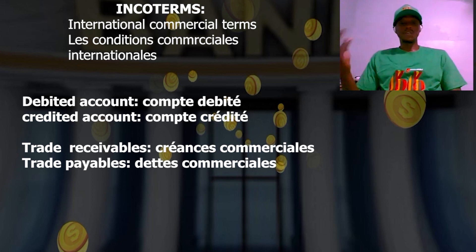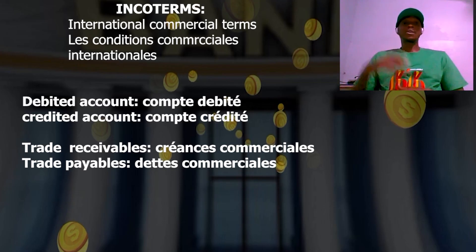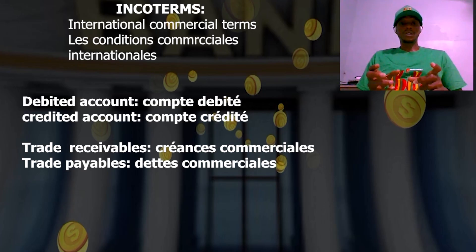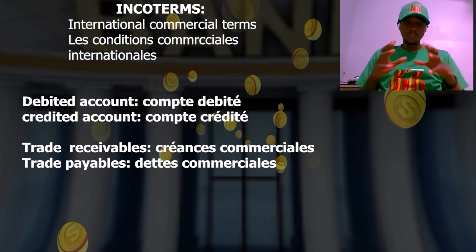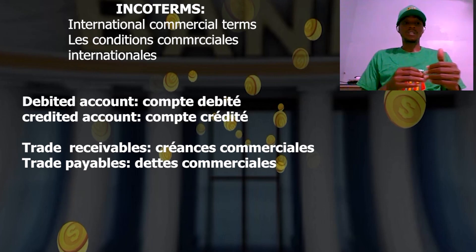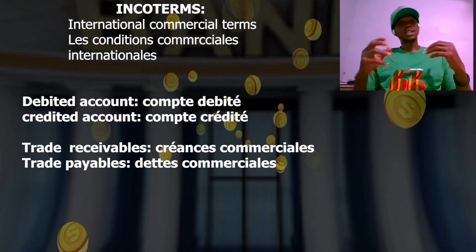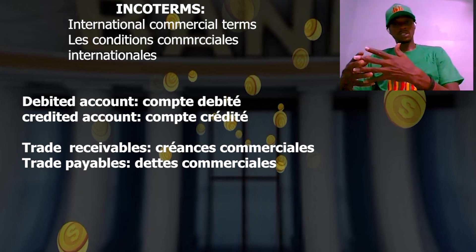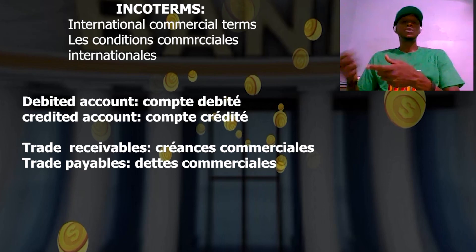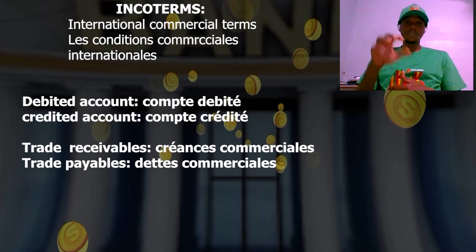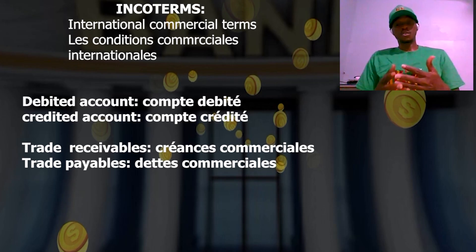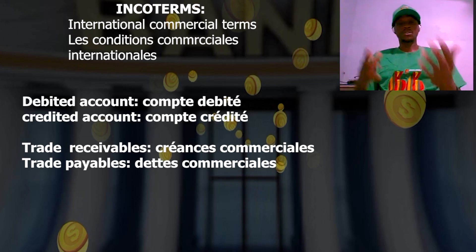Mais lorsque tu effectues des achats, des règlements à d'autres personnes ou pour honorer ton engagement face à une dette, à un prêt, ton compte sera crédité. C'est ça le sens de ces deux états qui déterminent le niveau du solde de ton compte bancaire — c'est-à-dire le solde est débité, le solde est crédité. Quand ton compte est débité, c'est que ton compte est approvisionné. Et quand ton compte est crédité, ça veut dire que ton compte est en diminution dû à certains achats, dû à certains règlements — on te trouve créancier. Donc ton compte est débité quand il y a eu dépôt d'argent ou transfert dans ton compte. Le compte crédité signifie sortie d'argent, sortie de flux monétaire de ton compte bancaire.